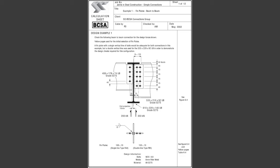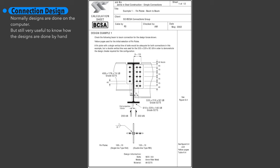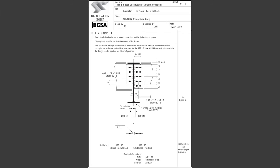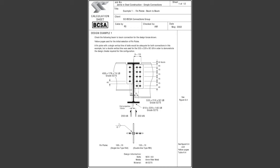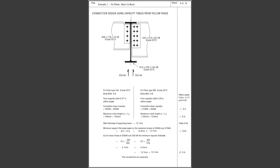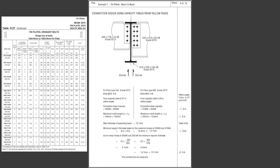Feel free to pause and copy the example as you please. Connection designs can take a really long time, which is why they are heavily computerized these days. This video would be too long to go step by step, so I'm showing a pre-made example and explaining some of the steps. In this example, two beams are being fixed into the side of another beam via a thin plate connection. We'll be using grade 8.8 M20 bolts with 6mm welds and steel grade S275. Just like the blue book for steel sections, there are capacity tables for thin plate design.